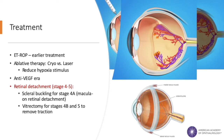Once detached, more invasive procedures are necessary to reattach the retina. A scleral buckle involves surgically placing a compressive band around the globe just under the rectus muscle attachments to help physically reattach the retina and prevent recurrent detachments.